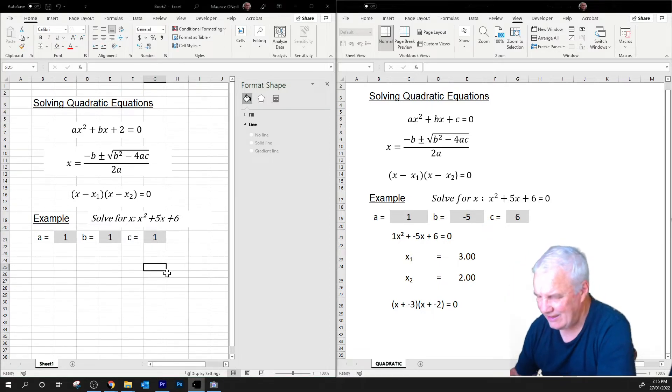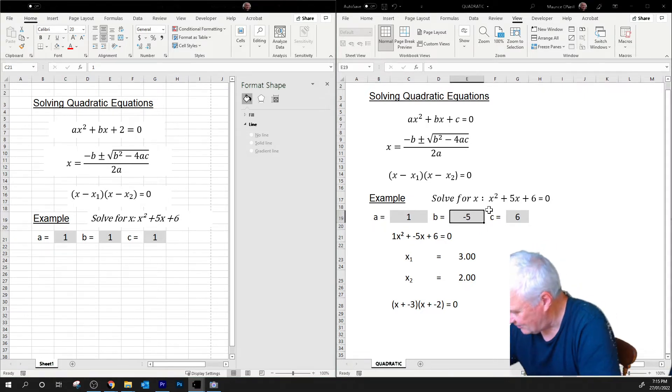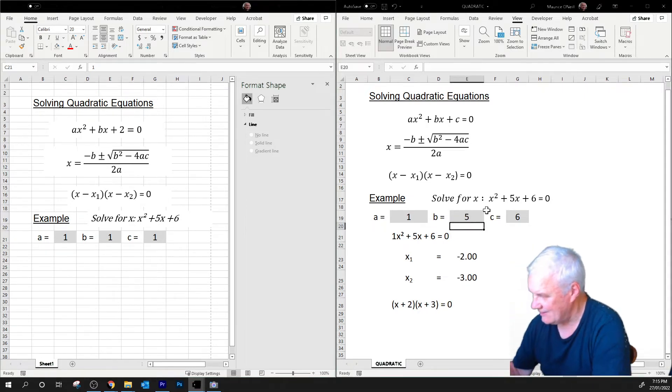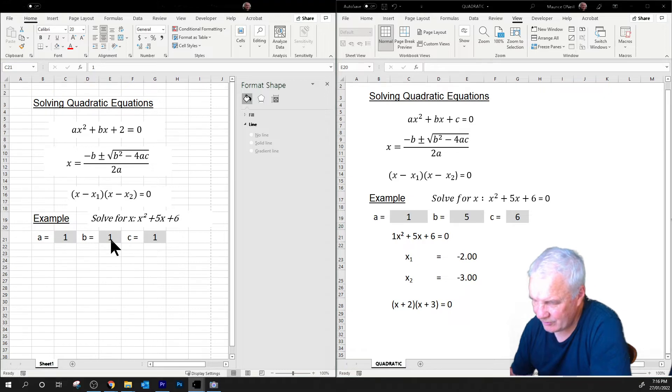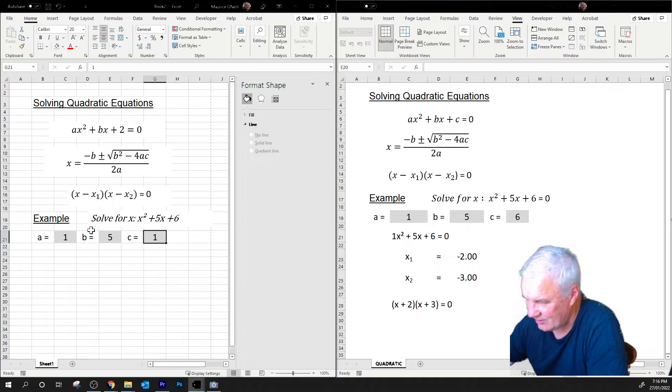We actually want this to be, well that should actually be, I'm just going back over to our other one here, that should be five. So we want that to be five in there. Oh no, sorry, wrong, one there, five there, and six there.